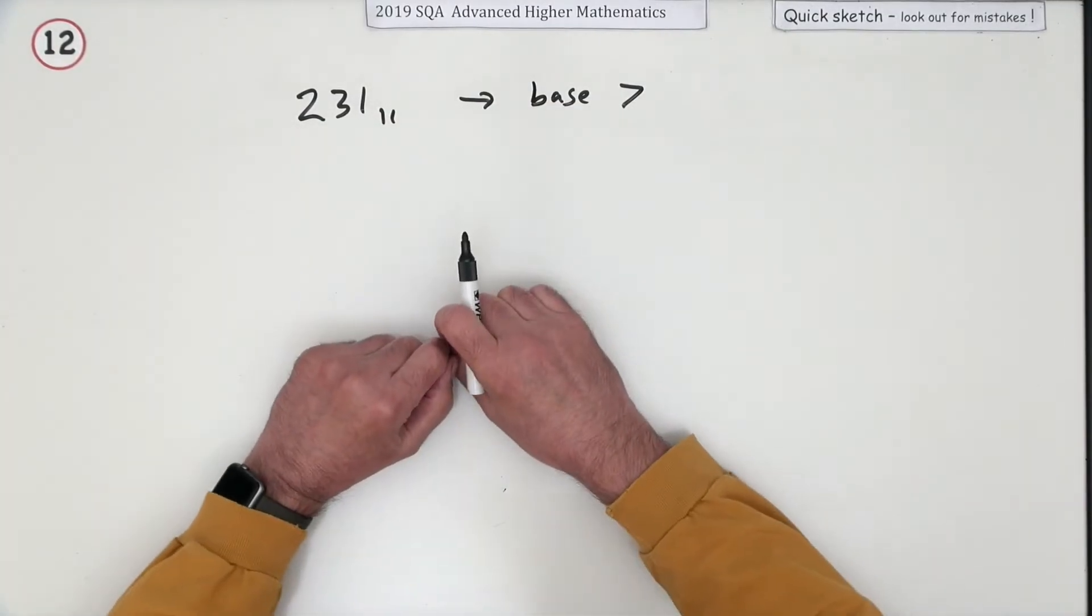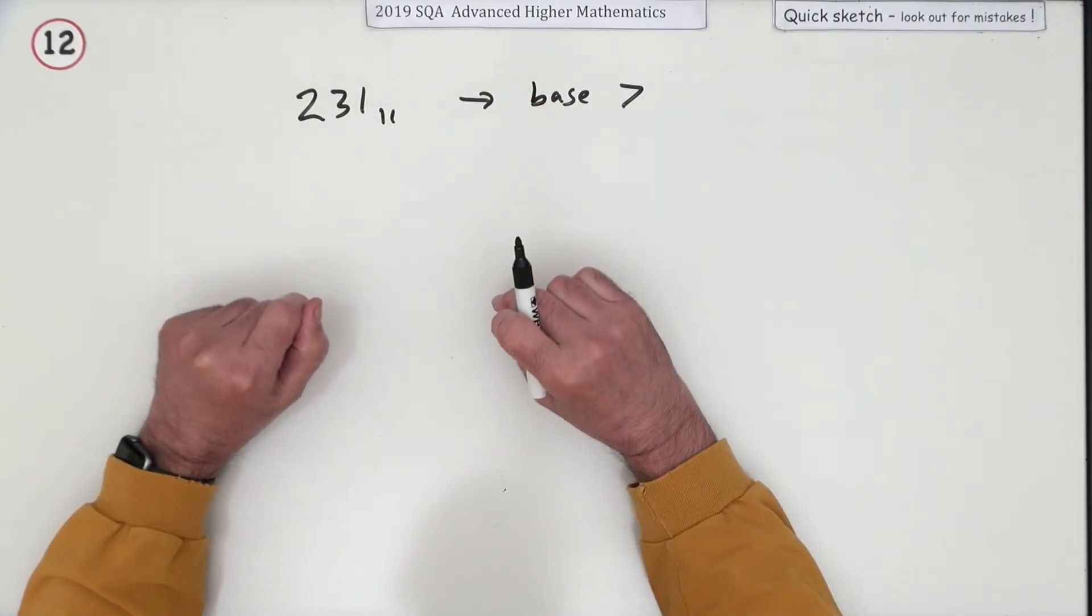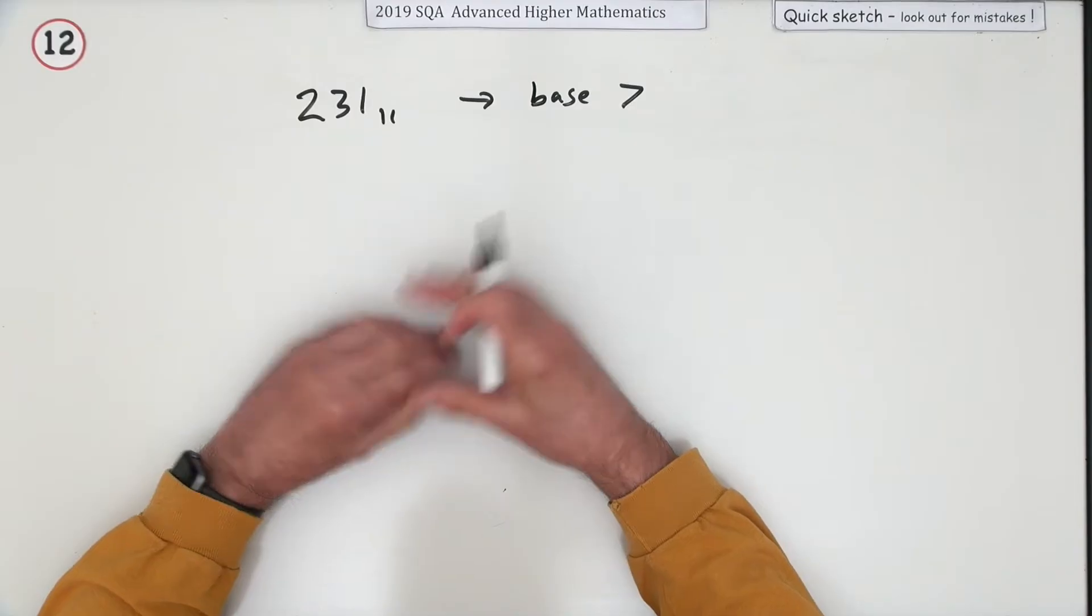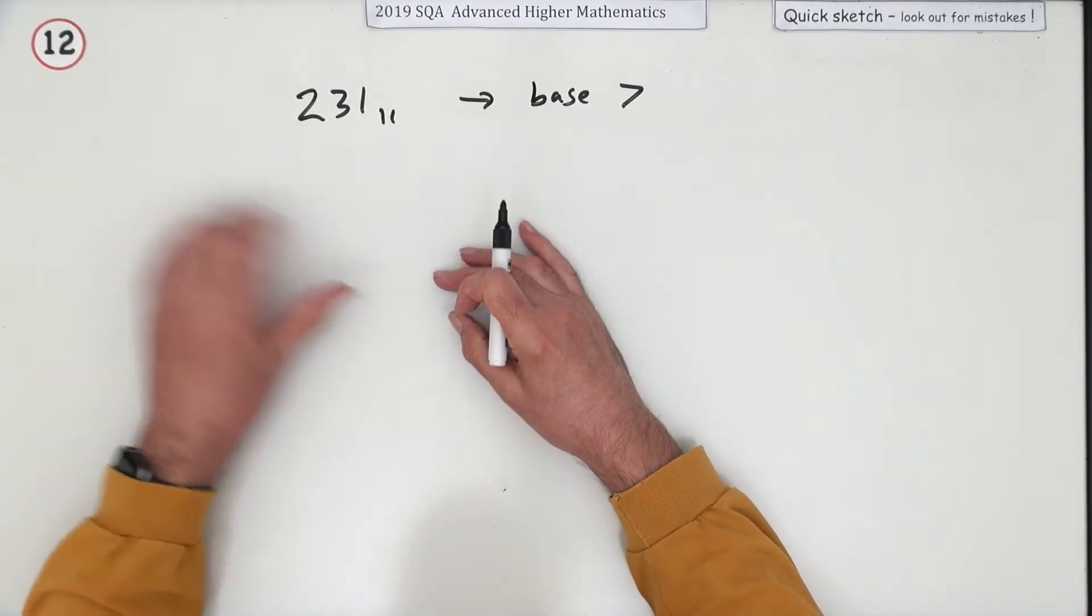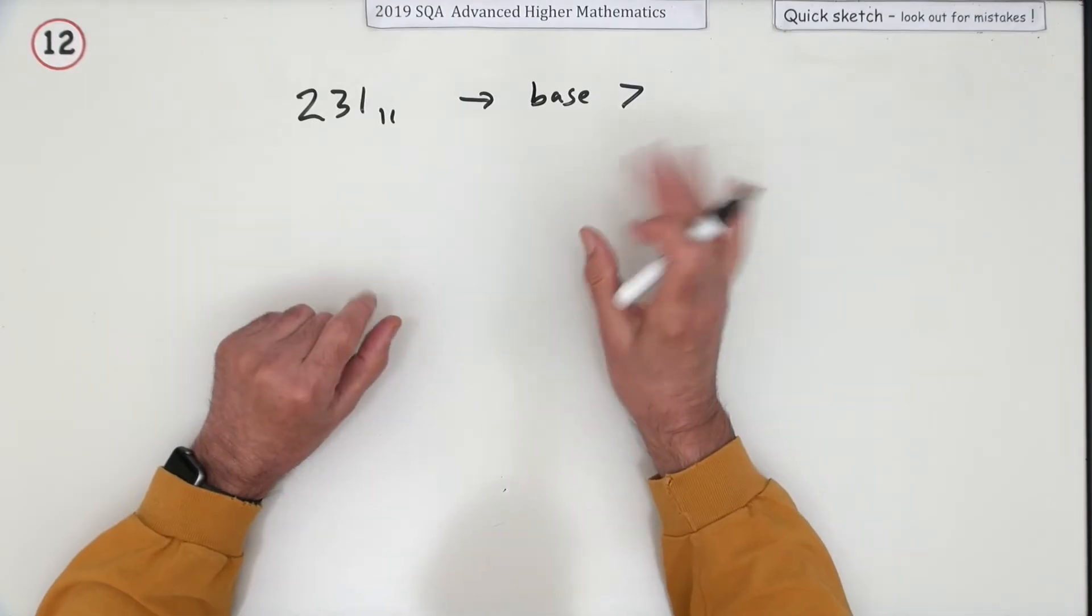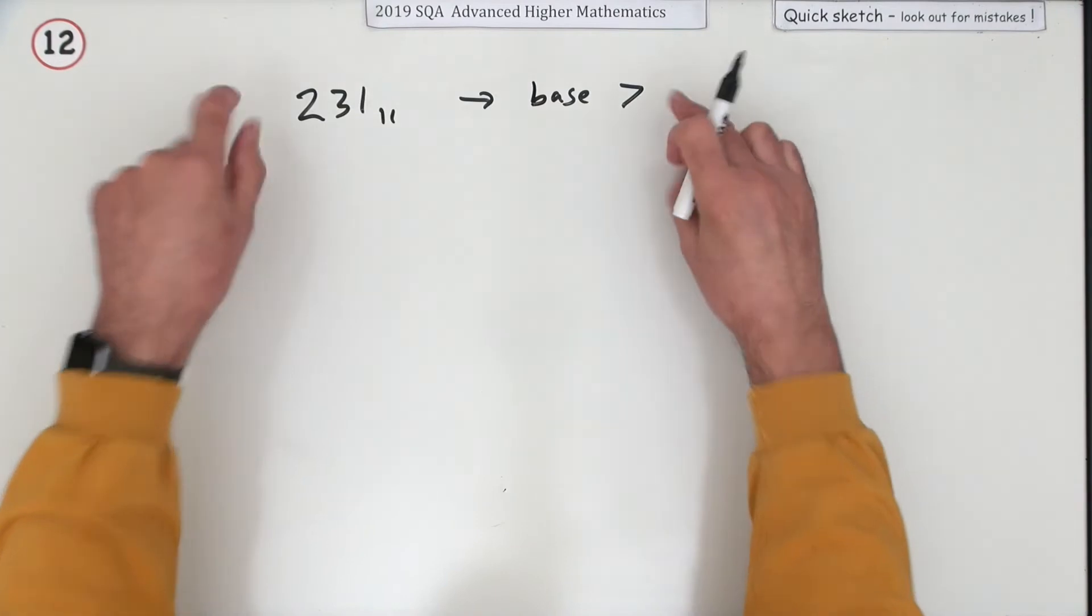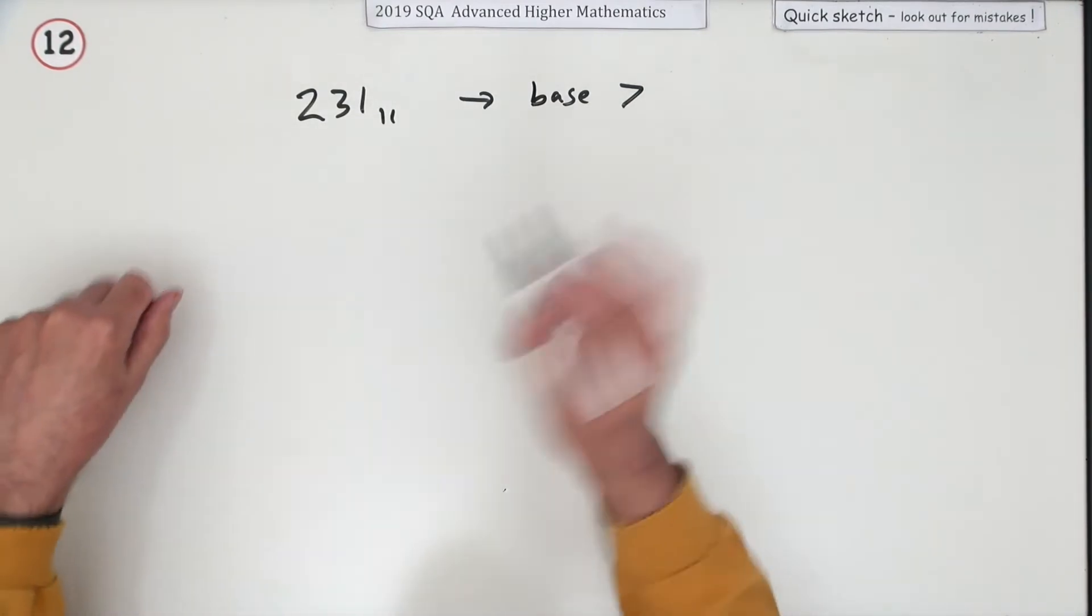Before the Advanced Higher became the Advanced Higher, it was called the Certificate of Sixth Year Studies. Back in the 90s, you used to get or could get questions on stem and leaf diagrams. Now you have these number bases, so you'll be laughing your heads off, hopefully.